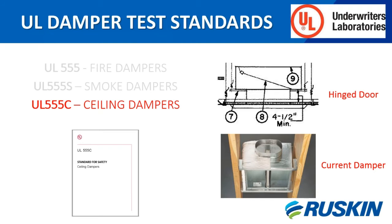The UL standard for ceiling dampers is UL 555C. This standard is used to evaluate ceiling radiation dampers for use in lieu of a hinge door type damper. The original ceiling dampers were called hinge door types because of their construction. The hinge door could vary in steel gauges but had both surfaces covered with 1/16-inch thick ceramic fiber paper and was held open with a fusible link.